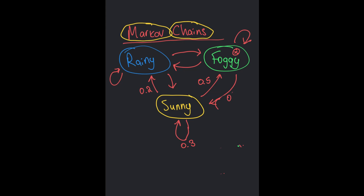Similarly, we could find or assign the probabilities for the other states as well. No matter which state we're currently in, we can then predict the probability of the next state. Hopefully that made sense — let me know in the comments below if you liked it, please give a thumbs up and subscribe, thanks so much, have a great day!